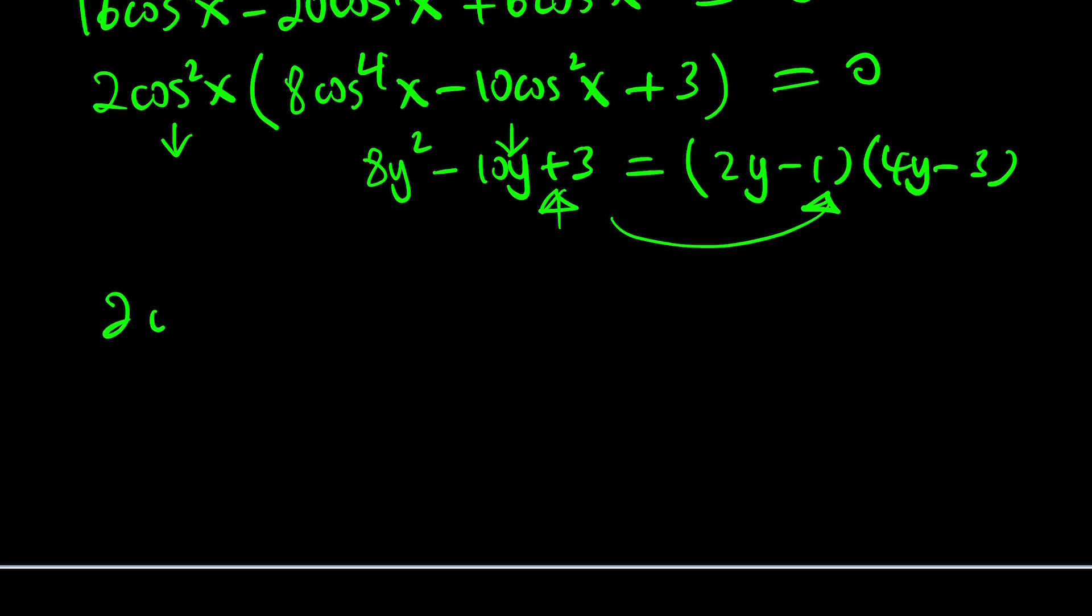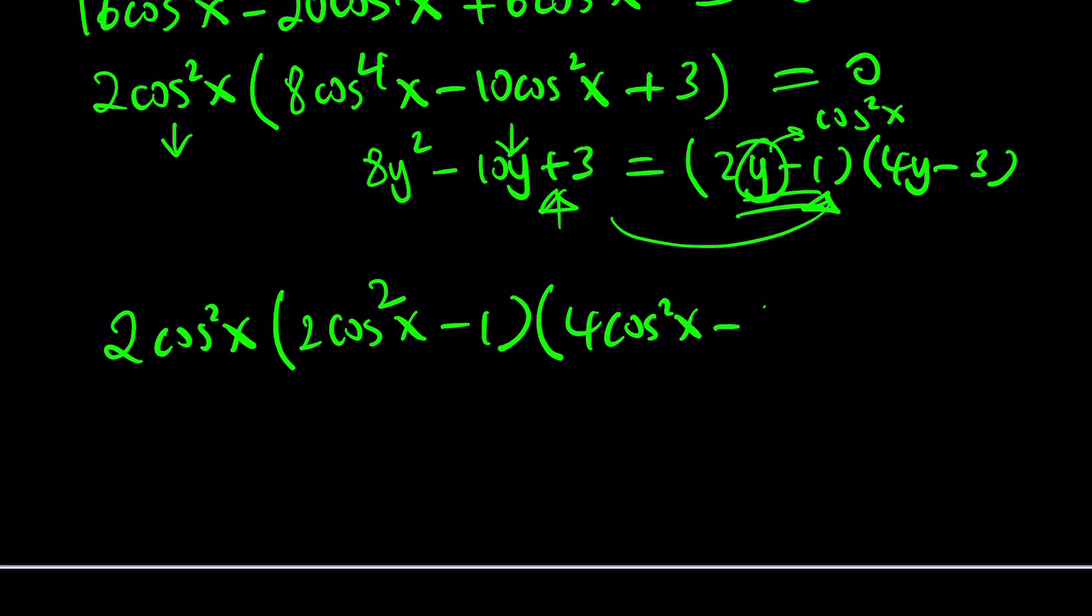But this now can be written as follows: 2 times cosine squared of x multiplied by 2 cosine squared of x minus 1, that's one of the factors that comes from 2y minus 1. Remember y is cosine squared, right? And then the other factor is just 4 cosine squared of x minus 3, and the whole thing equals 0. Everything is factored. Isn't that cool?